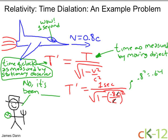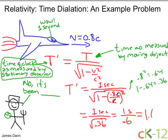And so just doing a little math here, 1 minus 0.64 equals 0.36. So what I end up with is 1 second divided by the square root of 0.36, which is just 1.67 seconds.